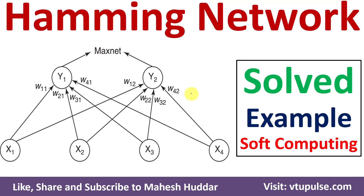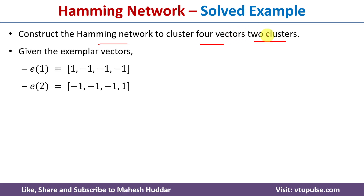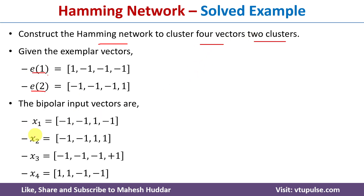Welcome back. In this video I will discuss Hamming network in soft computing with the help of a simple solved example. We need to construct a Hamming network to cluster four vectors into two clusters. Because we want two clusters, we need two exemplar vectors, E1 and E2, and four input vectors X1, X2, X3, and X4.